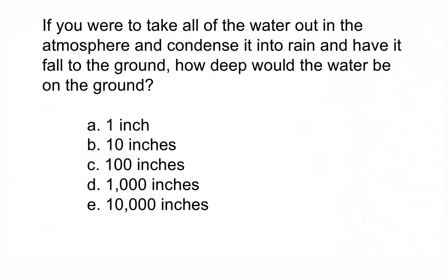3.43 quadrillion gallons. If that all rained out, how deep would it be? Turns out the correct answer is A, 1 inch. That's kind of amazing. That's a lot of water, but when you spread it out over the cross surface of the Earth, it's only an inch deep, which is why we should be very glad that we have a hydrologic cycle.